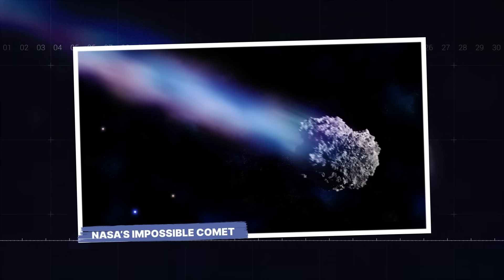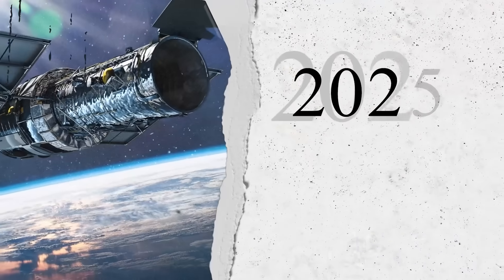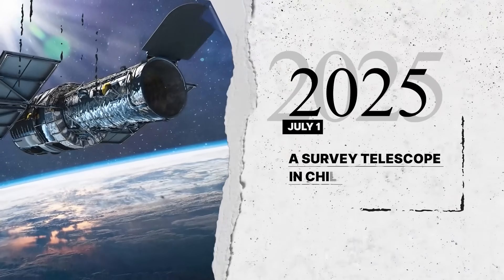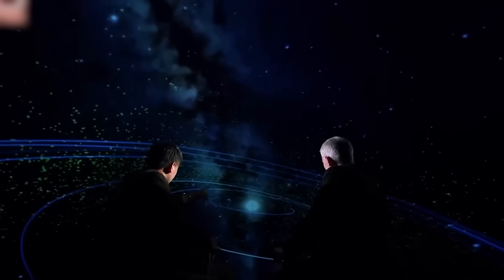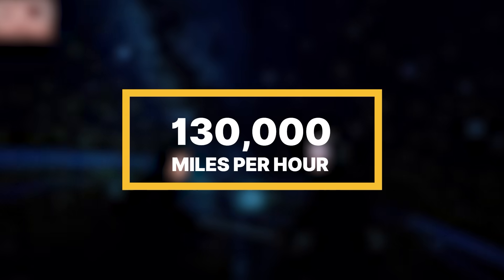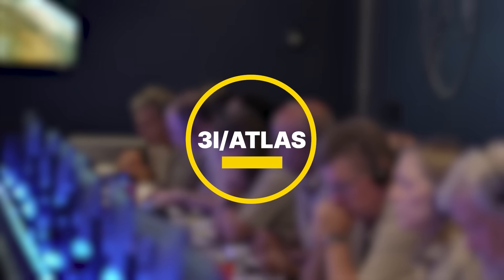NASA's Impossible Comet. On the 1st of July, 2025, a survey telescope in Chile picked up a faint smudge of light moving at an incredible speed. Clocking in at over 130,000 miles per hour, it was instantly flagged as an interstellar visitor, only the third one ever confirmed. It was named 3I Atlas.